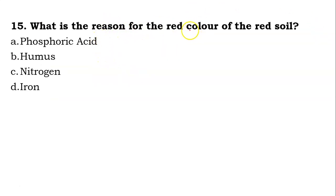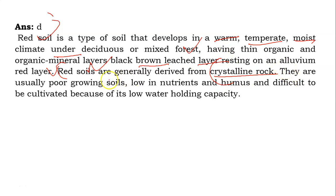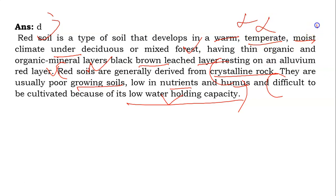The fifteenth question: what is the reason for the red color of red soil? Options are phosphoric acid, humus, nitrogen, or iron. The answer is D — due to iron. Red soil is a type of soil that develops in a warm, temperate, moist climate under deciduous or mixed forest, having a thin organic and organo-mineral layer, with a black-brown leached layer resting on an illuvium red layer. Red soils are generally derived from crystalline rock and are usually poor growing soils — low in nutrients and humus, and difficult to cultivate because of lower water-holding capacity.